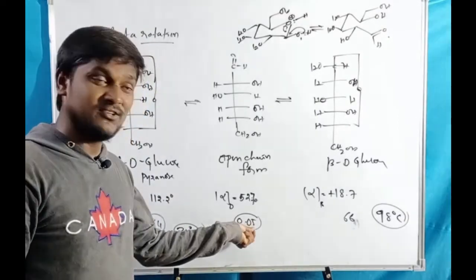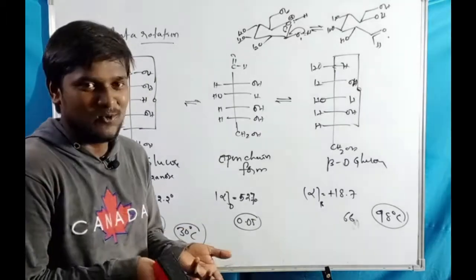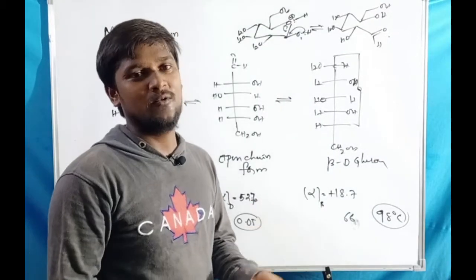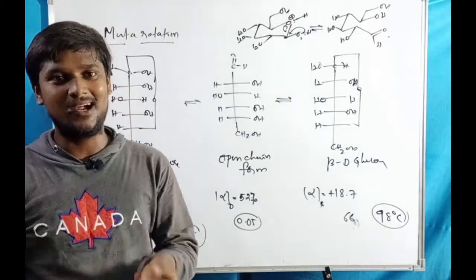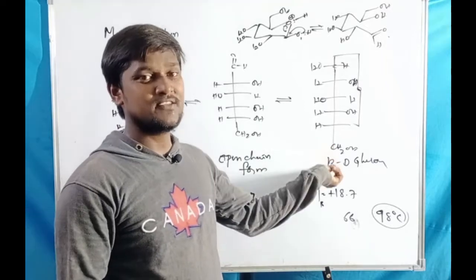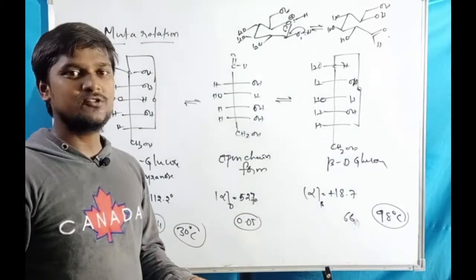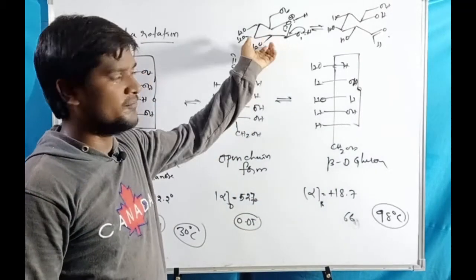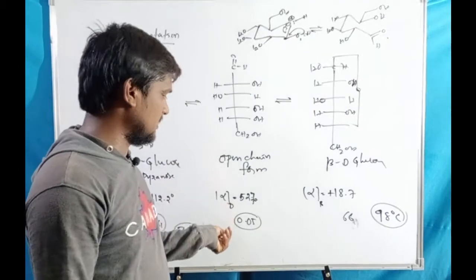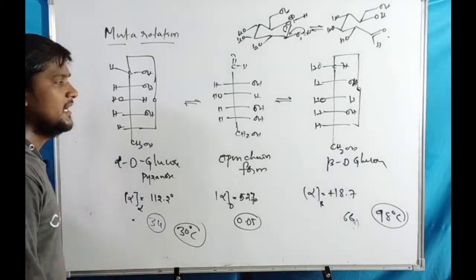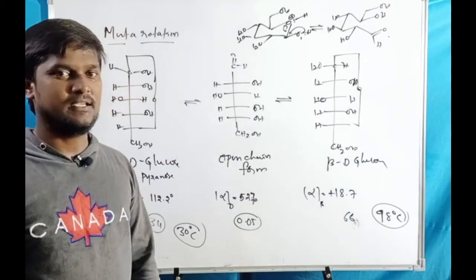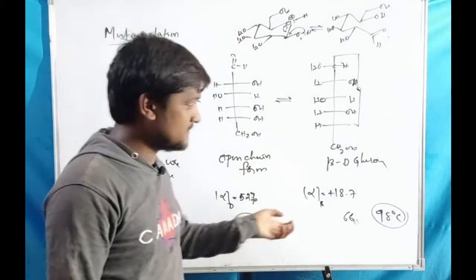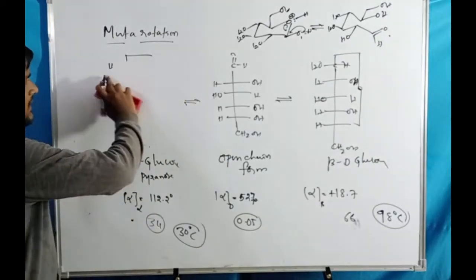Even though the open chain form is only 0.05%, glucose still gives positive results with mild oxidizing agents like bromine water and Tollens' reagent. This is because whenever alpha or beta isomers are dissolved in water, they continuously convert to the open chain form through mutarotation — so the open chain form is always being replenished in aqueous solution, enabling those reactions. Now let us calculate these percentage values through mathematical derivation.